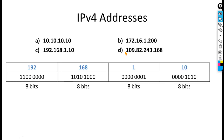An IPv4 address consists of 32 bits which is divided into 4 parts: the first part, second part, third part, and fourth part. Each part consists of 8 bits and is called an octet. Decimal address C is taken here and its first part represents the first octet, second part represents the second octet, and so on.